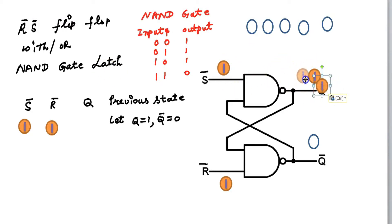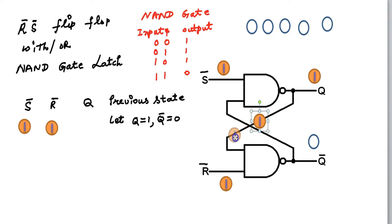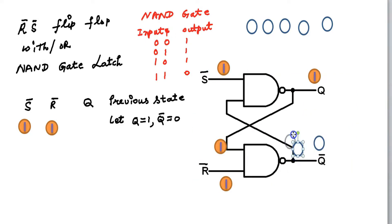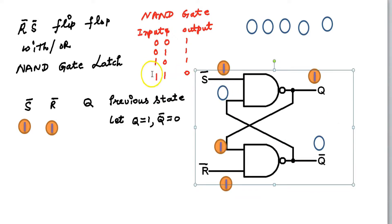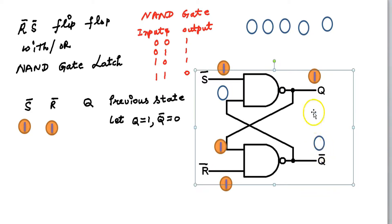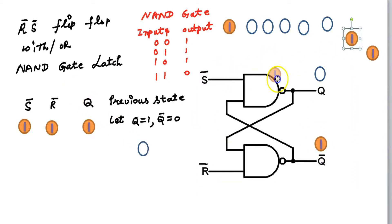So this 1,1 will come here. This 0 is here, meaning the whole line is at low potential, that is 0. The input of the upper gate becomes 1,0, and 1,1 gives 0. This is a stable state.